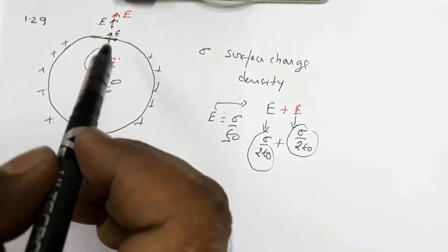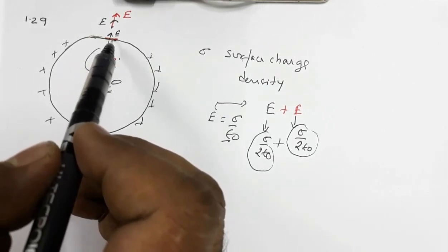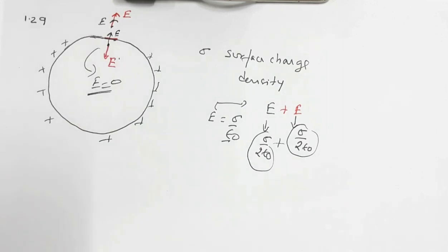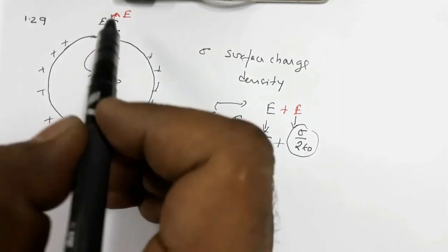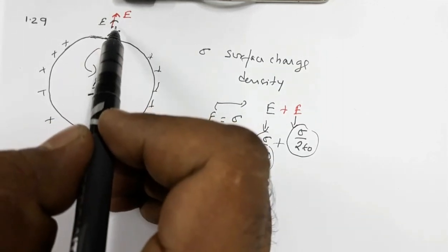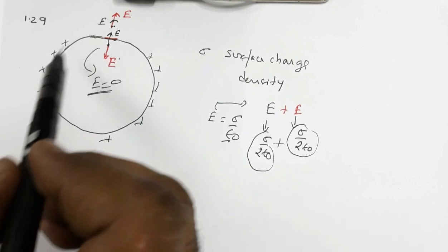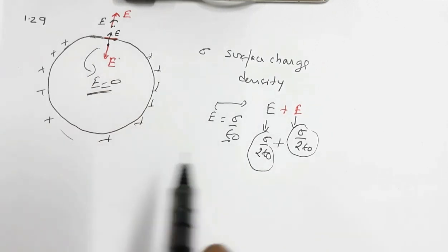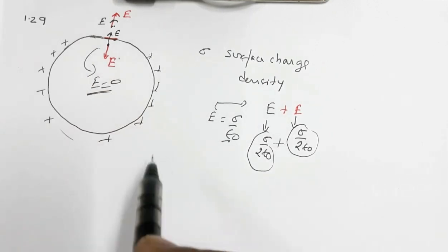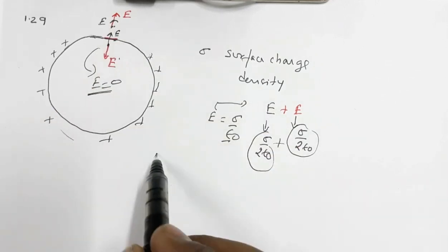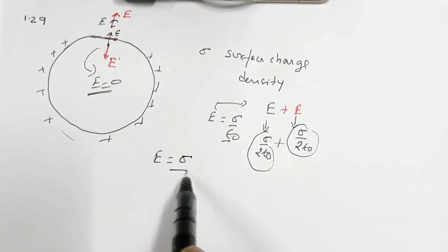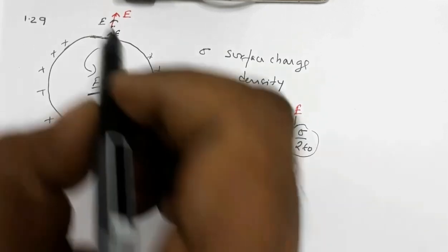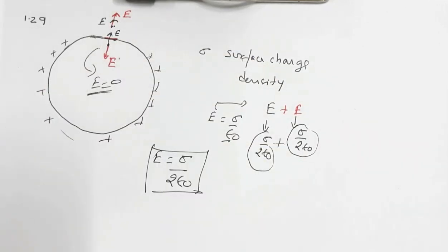Now, if we make a hole at the red part, the electric field near the hole will be due only to the rest of the hollow conductor (the black part). So the electric field in the outer region near the hole will have magnitude σ/(2ε₀), directed in the outward direction. This is how we arrive at the result.